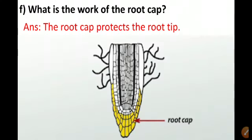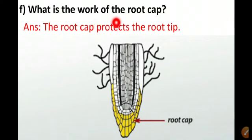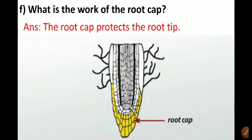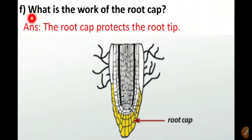Here is the last question: what is the work of the root cap? The answer is the root cap protects the root tip. In this picture you can see the root cap and this root cap protects the root tip. So the function or the work of the root cap is to protect the root tip. The root cap protects the root tip.